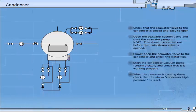When the pressure is coming down, check that the alarm condenser high pressure is reset. Start the condensate pump and check the condensate flow.